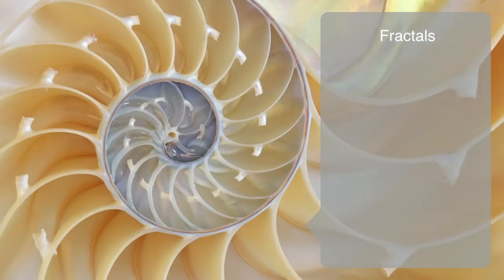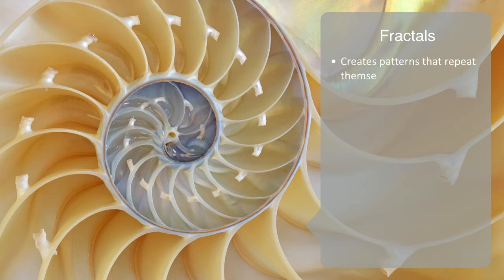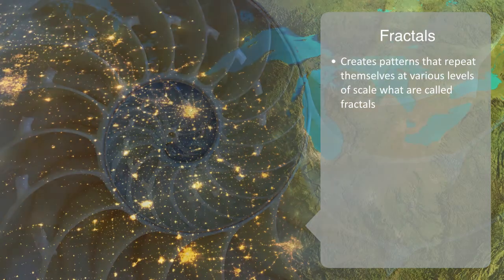This hierarchical structure that emerges within complex systems, often creates patterns that repeat themselves at various scales, what are called fractals. Such as can be seen in seashells, the emergent patterns of a snowflake, and the macroscale structure to our engineered environment.